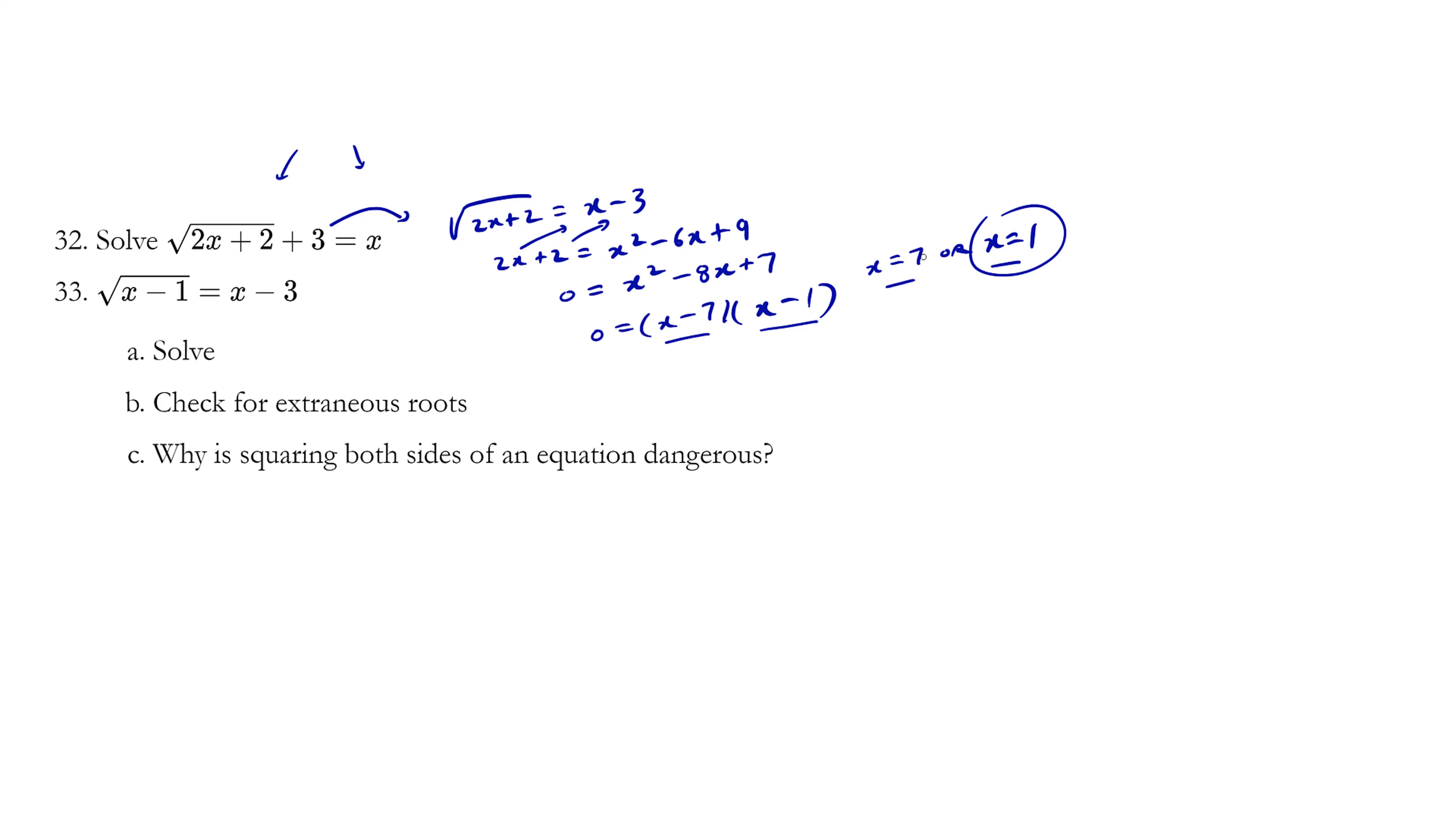Let's try x equals 1 first. So left side is equal to √(2 times 1 + 2) + 3. So this becomes √4 which is 2 plus 3 is 5. Now the right side is simply x. Right side equals 1. So we can see there's a problem here.